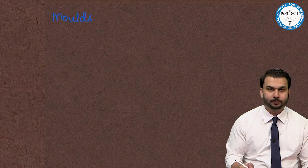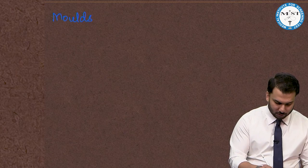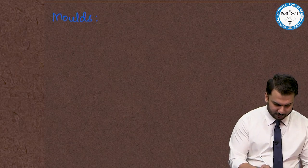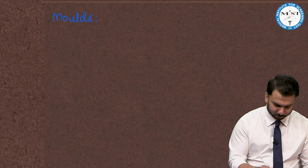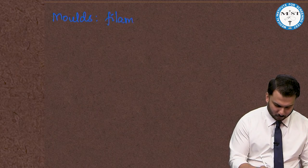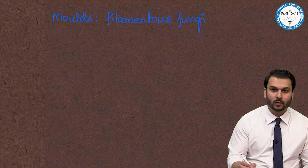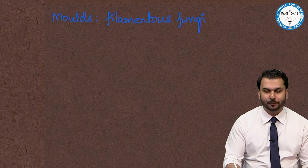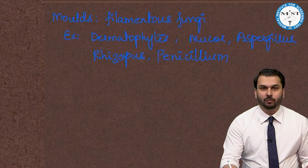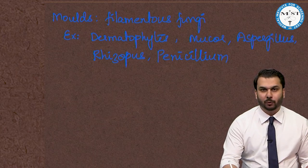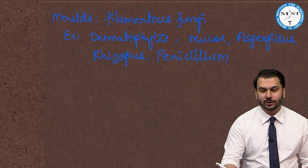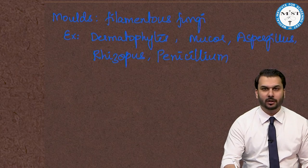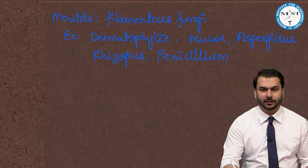The third category is molds, which are nothing but filamentous fungi. These filamentous fungi technically exist as hyphae. Examples of molds include dermatophytes, Mucor, Aspergillus, Rhizopus, and Penicillium.